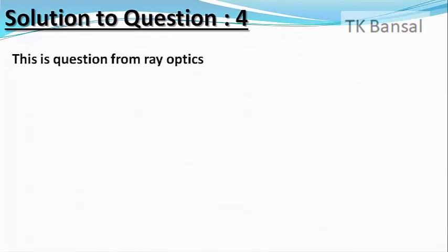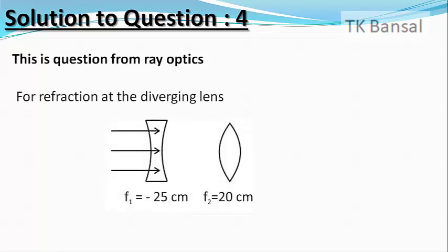Let us first consider refraction from the diverging lens. Here a parallel beam of light is incident on the diverging lens of focal length F1 equals minus 25 cm as shown in the figure.